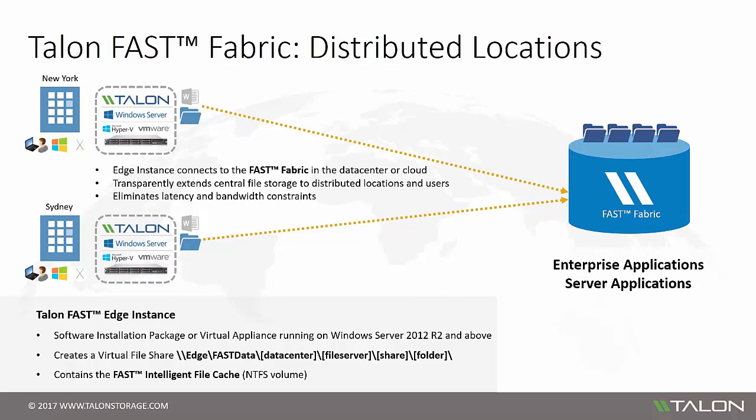The Fast Edge instance is a software installation package or virtual appliance running on Windows Server 2012 R2 and above. Once integrated into the Fast Fabric, the Edge creates a virtual file share which transparently presents the centralized storage to the branch. This virtual file share can be accessed by users as a mapped drive or integrated into a DFS namespace. The way users access and use their data is non-disruptive to their existing workflow and immediately familiar to both users and administrators — to the end user, it will look and feel like a traditional file server, but on a global scale.